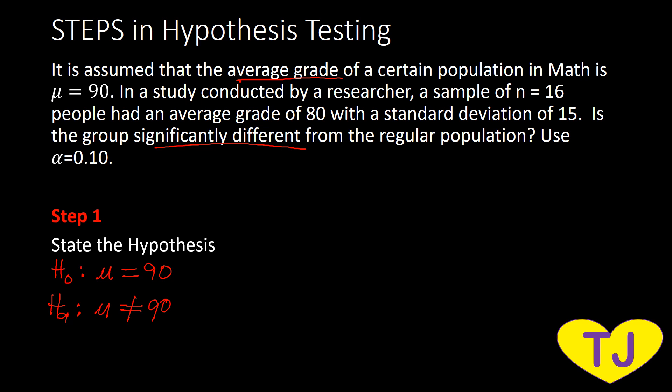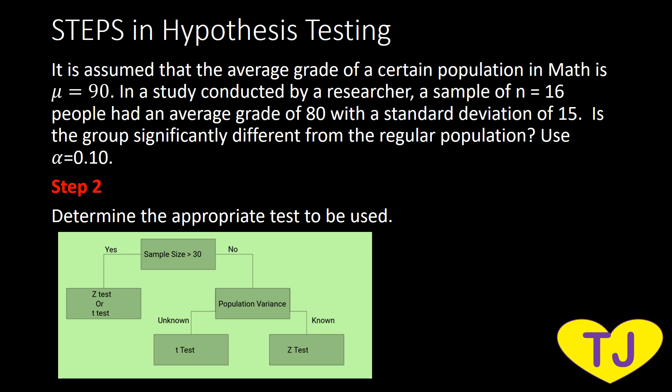Next, step two: determining the appropriate test to use. To decide between Z test or T test, we follow the decision diagram. First, consider the sample size — it is 16, which is small and not greater than 30, so that is a no. Since that is a no, we check whether the population variance or population standard deviation is known or unknown. There is no mention of population standard deviation in the problem, so that is also a no. That leads us to the T test.